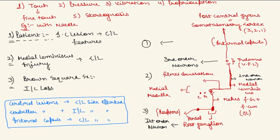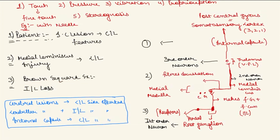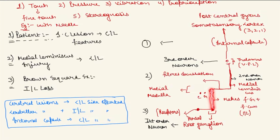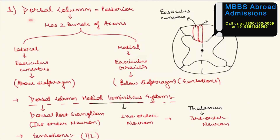If the lesion is in the medial lemniscus — where the second order neuron originates — again contralateral loss occurs because the fibers have already crossed. In Brown-Séquard syndrome, one half of the spinal cord is transected. Here, the dorsal column — from where fasciculus gracilis and fasciculus cuneatus originate — is injured on the same side, so there is ipsilateral loss of all dorsal column sensations, because the fibers have not yet crossed at that level.